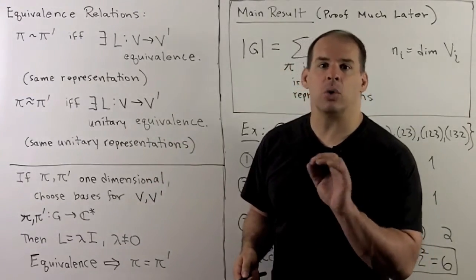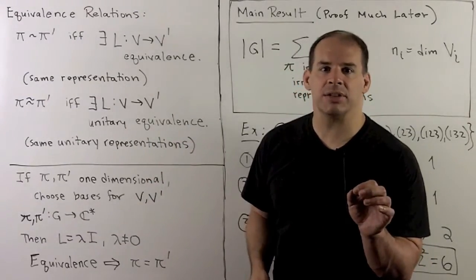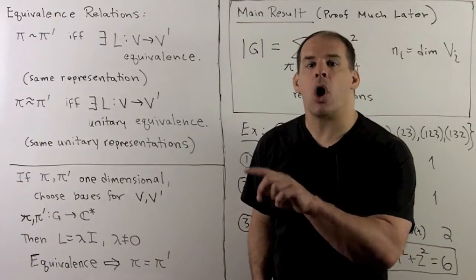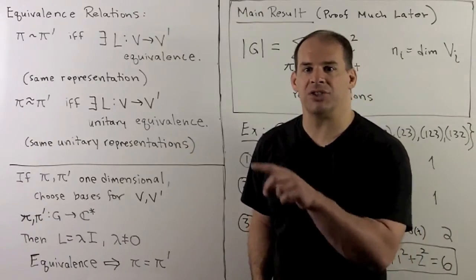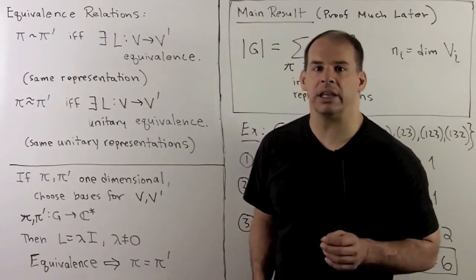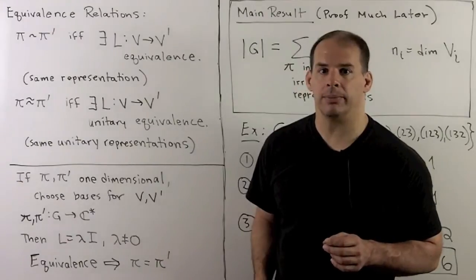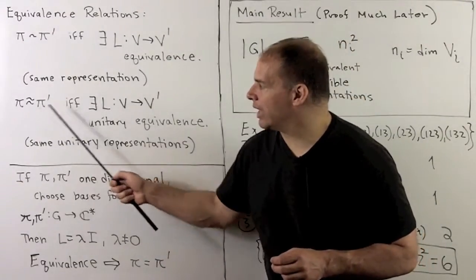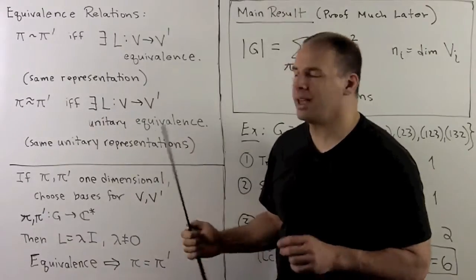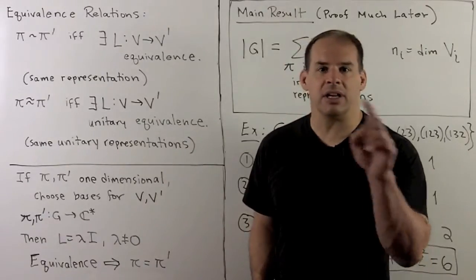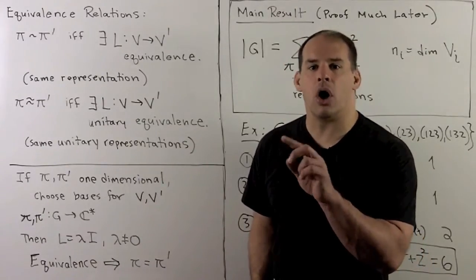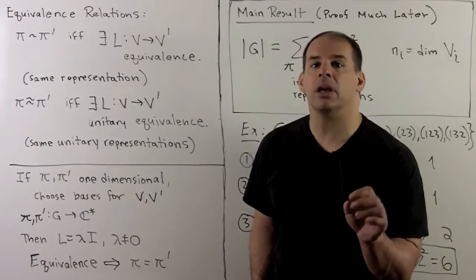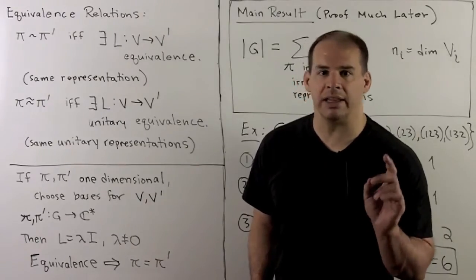The resulting equivalence classes — a given class — will consist of all representations that are the same up to a relabeling. Likewise, we can define a relation for unitary equivalence. Then a given class will consist of all unitary representations that are the same up to a relabeling.